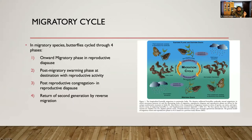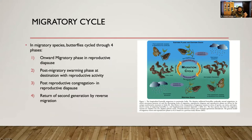Coming to the migratory cycle: migratory butterflies go through four phases. First, the onward migratory phase — butterflies are in reproductive diapause and travel to breeding grounds on the other side, such as the Eastern Ghats. Then there is a post-migratory swarm and reproductive activity at the destination. When the climate changes, there is a post-reproductive congregation where they aggregate into large congregations waiting for environmental cues, going into reproductive diapause again. As rains reach the Eastern Ghats, they return — the return migration. These are the four basic phases.